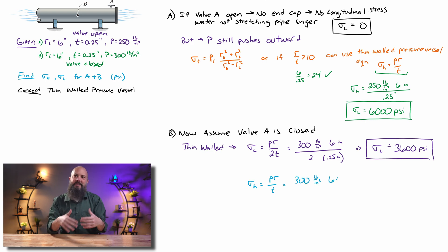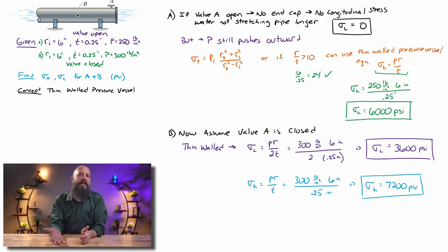And the hoop stress is still exactly the same. Just PR over T, same as in the last case. It doesn't matter that now we have longitudinal. Hoop stress is still the same. PR divided by T, 7,200 PSI or 7.2 KSI.